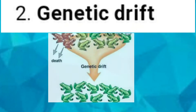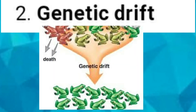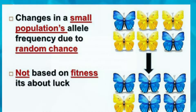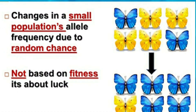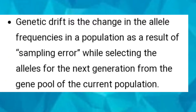The next factor is genetic drift. Genetic drift is the change in the allele frequencies in a population as a result of sampling error while selecting alleles for the next generation from the gene pool of the current population.